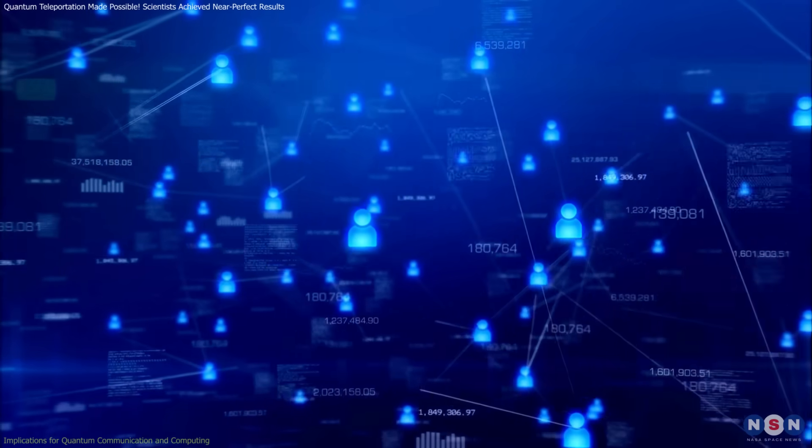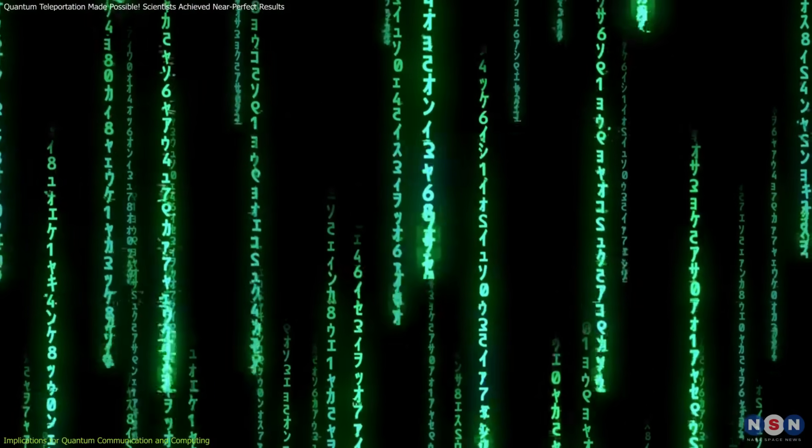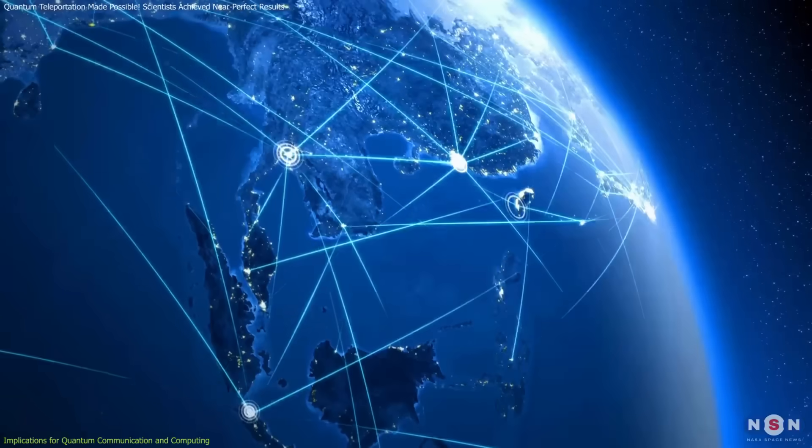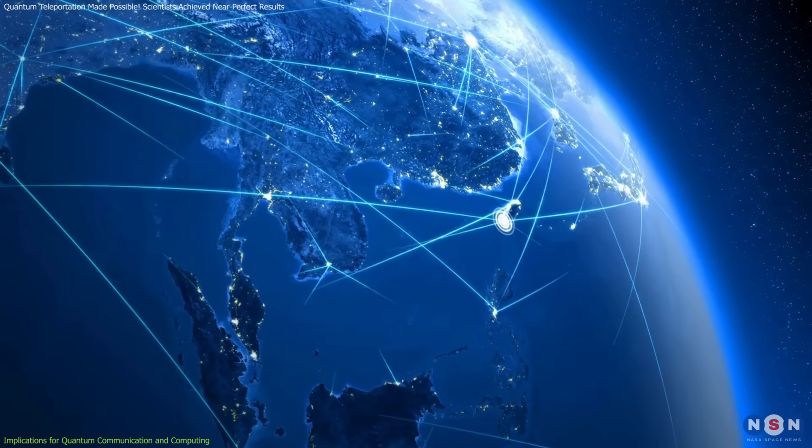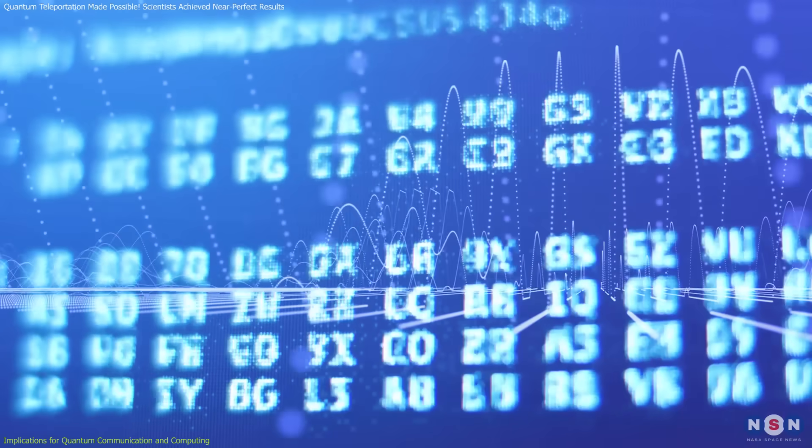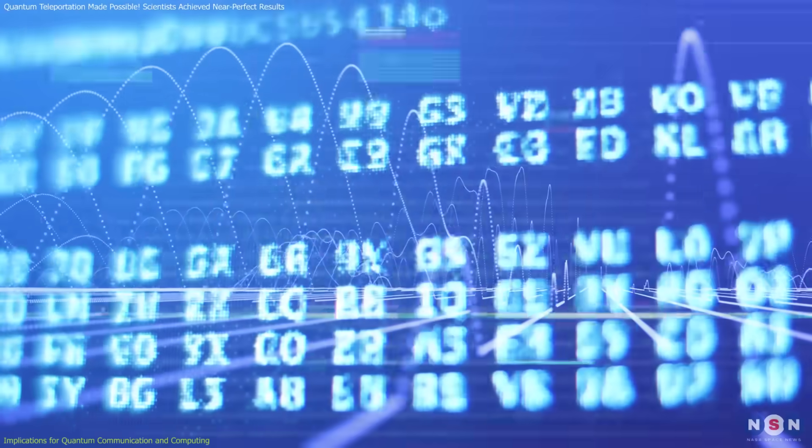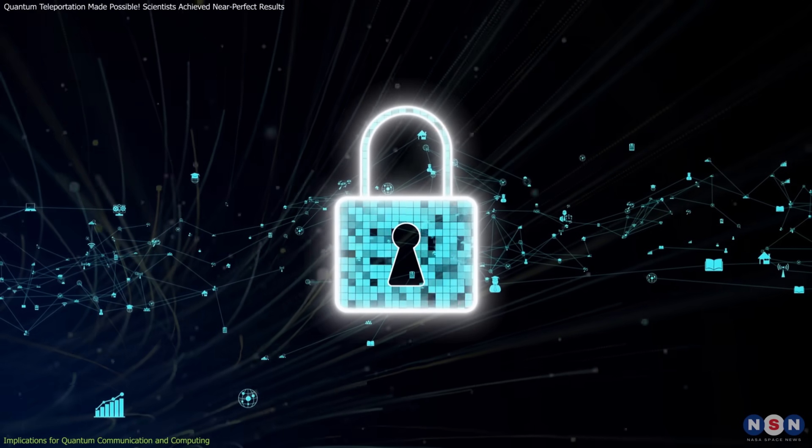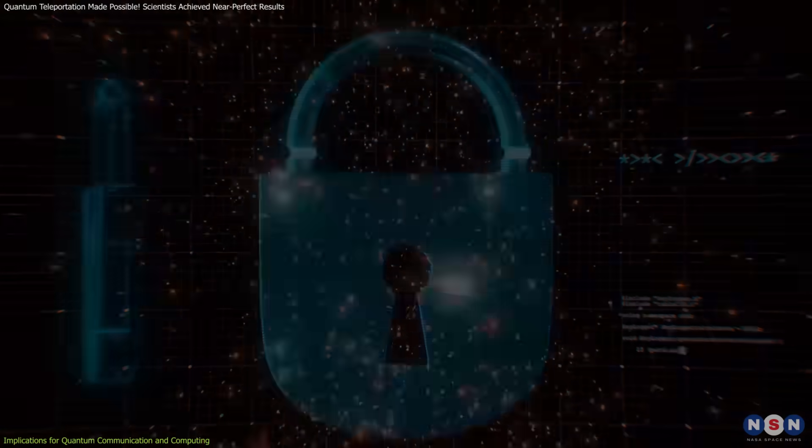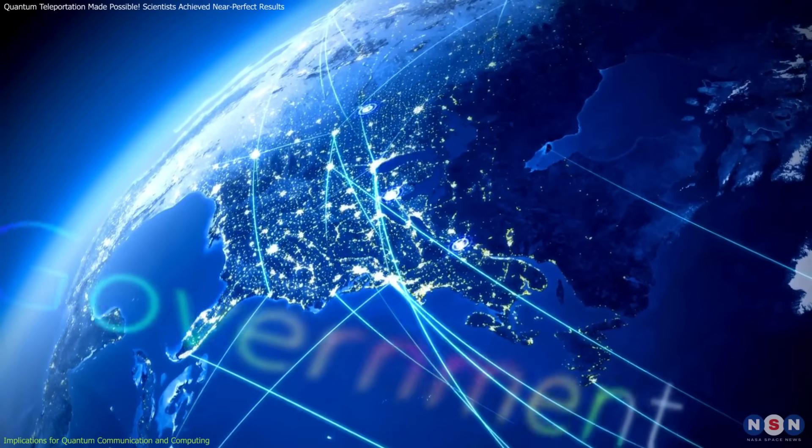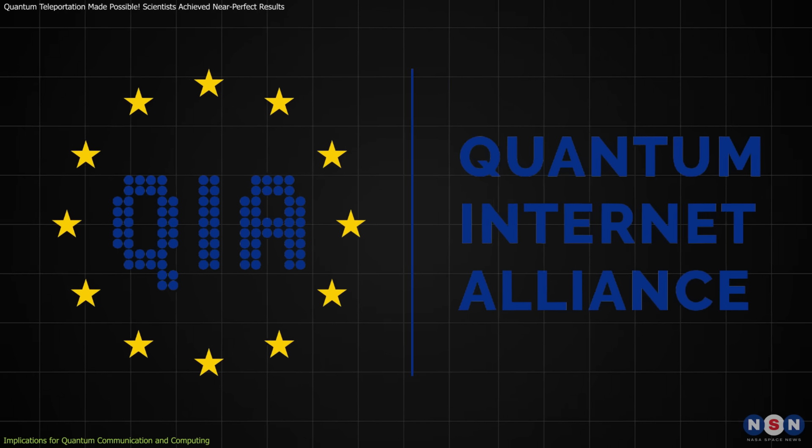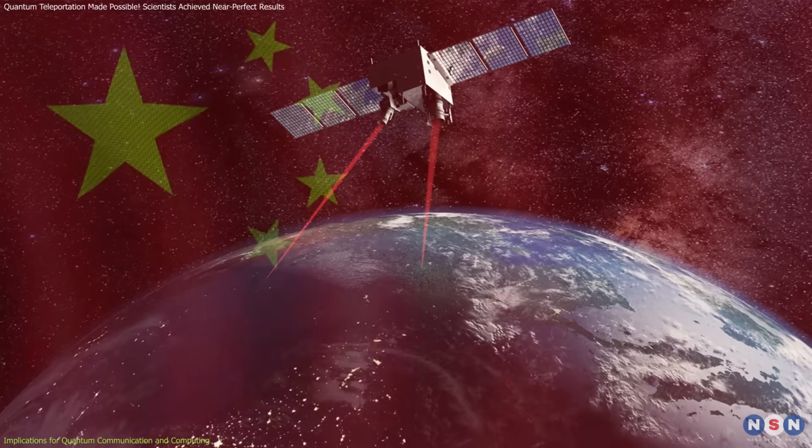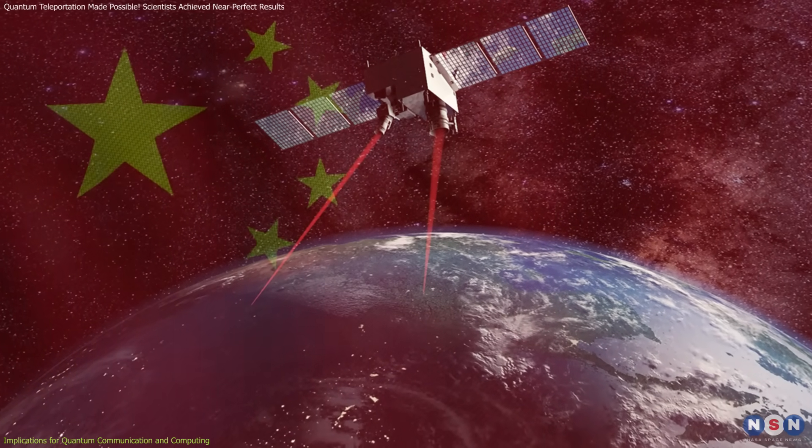One of the most immediate applications lies in secure communication. In traditional encryption, data security relies on mathematical complexity, which can theoretically be cracked with enough computational power. However, quantum communication fundamentally changes this game. Because entangled particles are so delicate, any attempt to intercept or eavesdrop on a quantum signal disrupts the entanglement, alerting the sender and receiver. This means that quantum communication channels are inherently unhackable, offering an unparalleled level of security. Governments and industries are already racing to implement quantum communication networks. For example, the European Union's Quantum Internet Alliance is working toward creating a continent-wide quantum internet by 2030. Similarly, China's advancements with the Micius satellite put it at the forefront of this global competition.